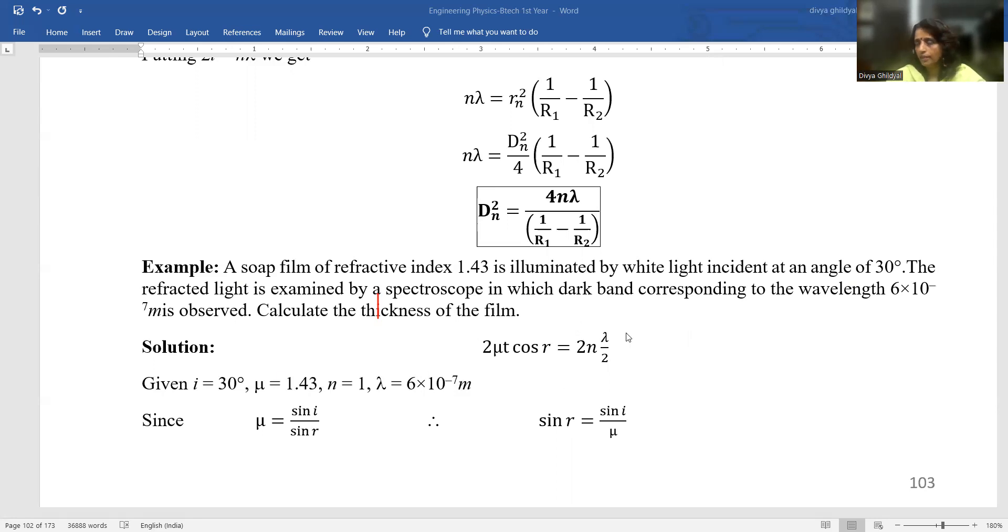So, I know that the formula for path difference is 2μT cos R = Nλ/2. We have been given I = 30°, μ = 1.43, N = 1, λ = 6×10⁻⁷.